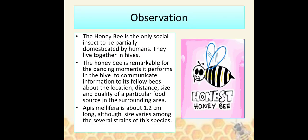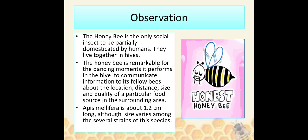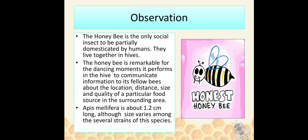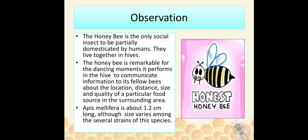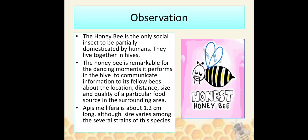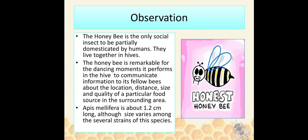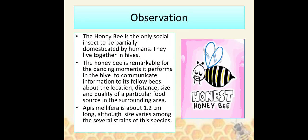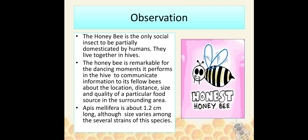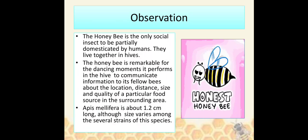Observation: The honeybee is the only social insect to be partially domesticated by humans. They live together in hives. The honeybee is remarkable for the dancing movements it performs in the hive to communicate information to fellow bees about the location, distance, size, and quality of a particular food source in the surrounding area. Apis mellifera is about 1.2 cm long, although size varies among the several strains of the species.